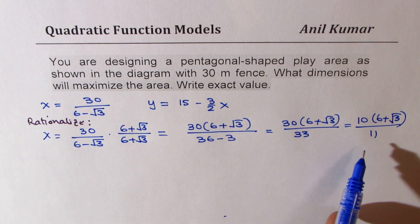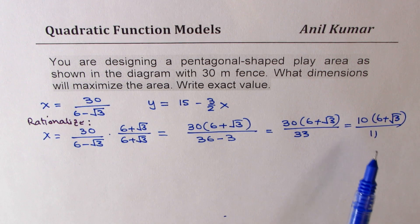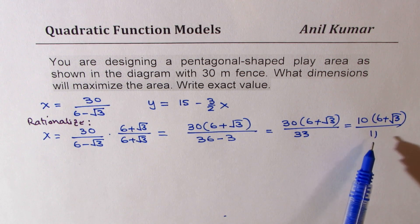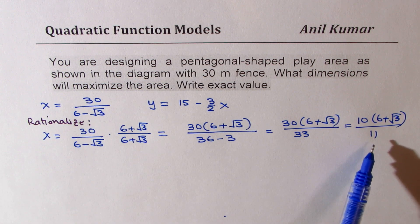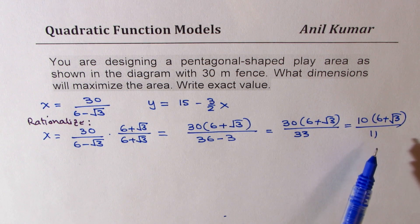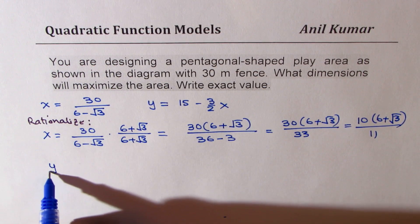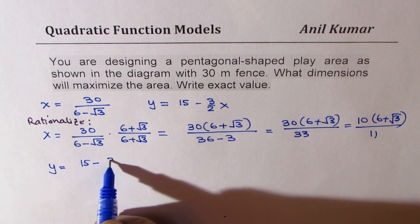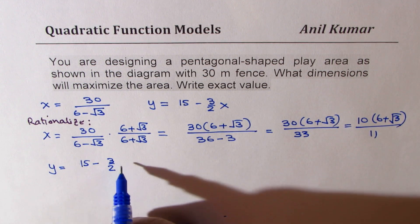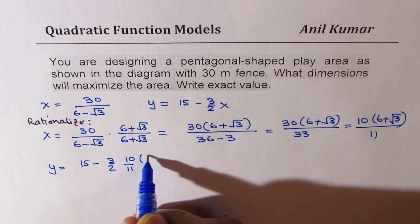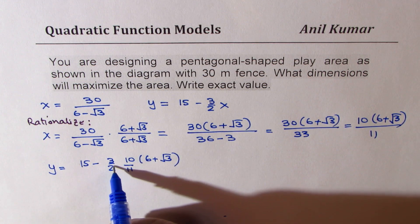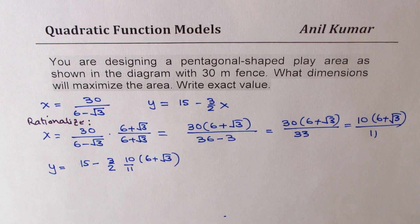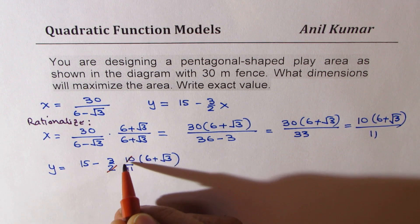I hope you understand and appreciate why we rationalize — that could be a choice in multiple choice questions. For y: y = 15 − (3/2)·[10(6 + √3)/11] = 15 − (15/11)·(6 + √3). Dividing 3/2 by 10/11: (3/2)·(10/11) = 15/11.